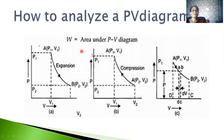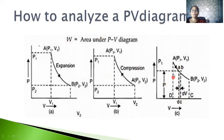The area under the PV diagram gives the work done in any process. For a small change in volume ΔV, we can calculate the work done as W = P × ΔV, where P represents the pressure and ΔV represents the small change in volume. This is the way of analyzing a PV diagram.